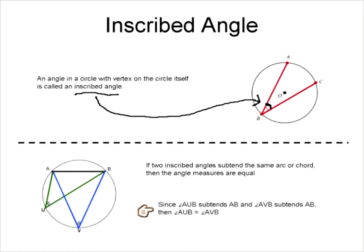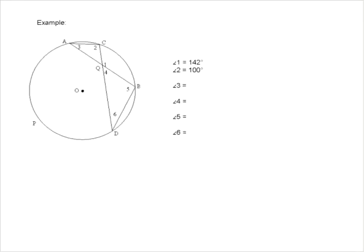Since angle AUB subtends chord AB, and angle AVB subtends chord AB, then angle AUB and angle AVB must be equal — they must be the same. So that's what we're going to be looking for when trying to solve these problems: inscribed angles that subtend the same arc or same chord.